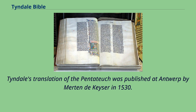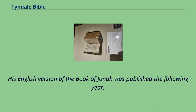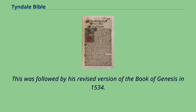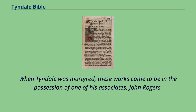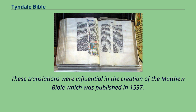Tyndale's translation of the Pentateuch was published at Antwerp by Merten de Keyser in 1530. His English version of the Book of Jonah was published the following year, followed by his revised version of the Book of Genesis in 1534. Tyndale translated additional Old Testament books including Joshua, Judges, 1 and 2 Samuel, 1 and 2 Kings, and 1 and 2 Chronicles, but they were not published and have not survived in their original forms. When Tyndale was martyred, these works came to be in the possession of one of his associates, John Rogers. These translations were influential in the creation of the Matthew Bible, which was published in 1537.